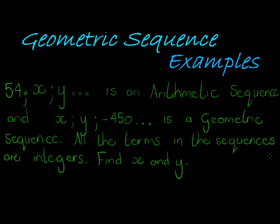Here is another lovely example. 54, x, y is an arithmetic sequence and x, y, -450 is a geometric sequence. All the terms in the sequences are integers. Find x and y.